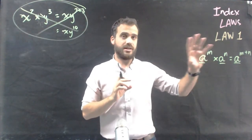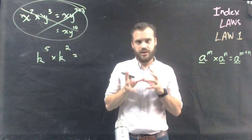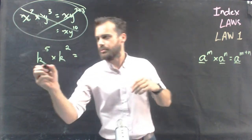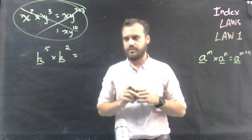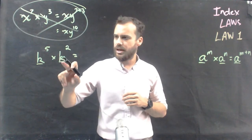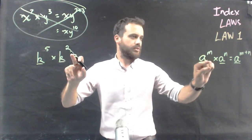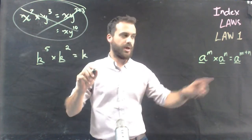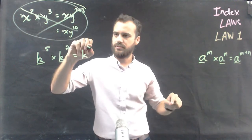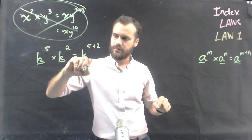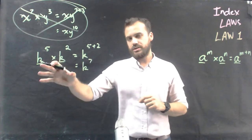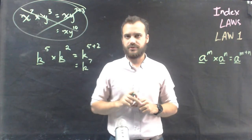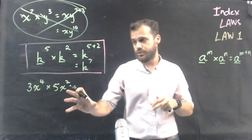Let's look at how index law 1 really works. Here's a good example: straight away you can see we can use this index law because the bases are the same. So k to the power of 5 times k to the power of 2 is equal to k to the power of 7.